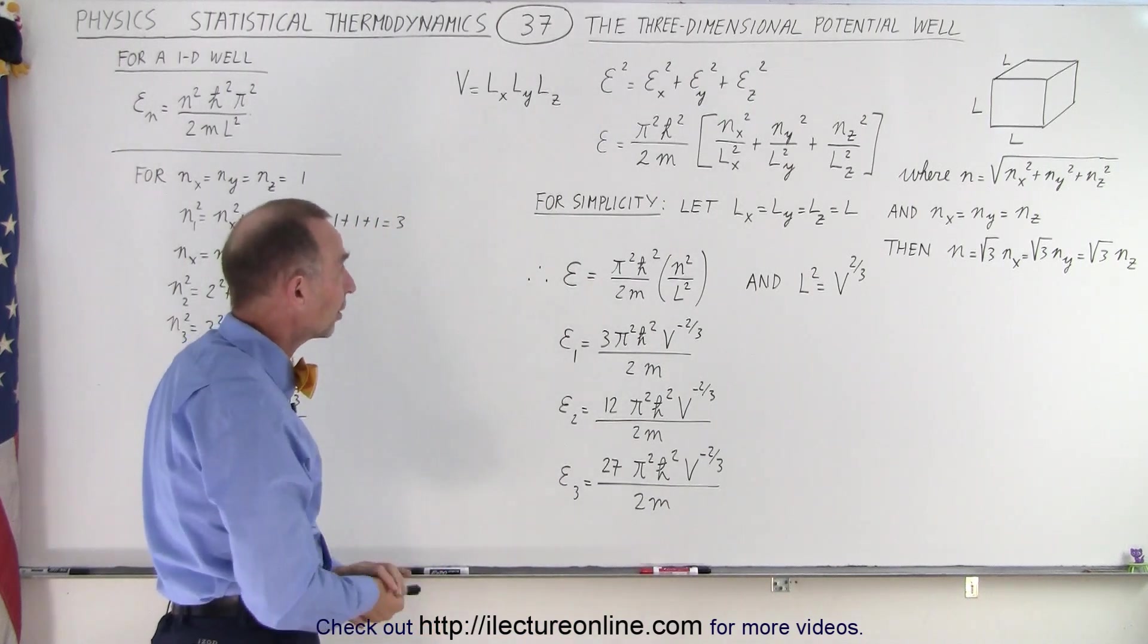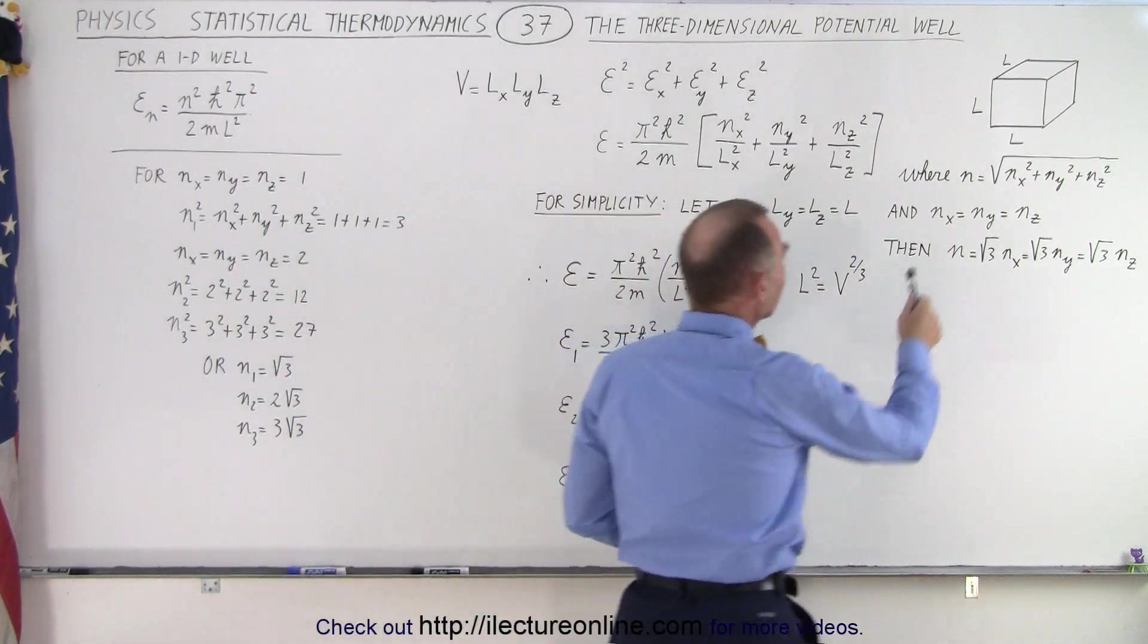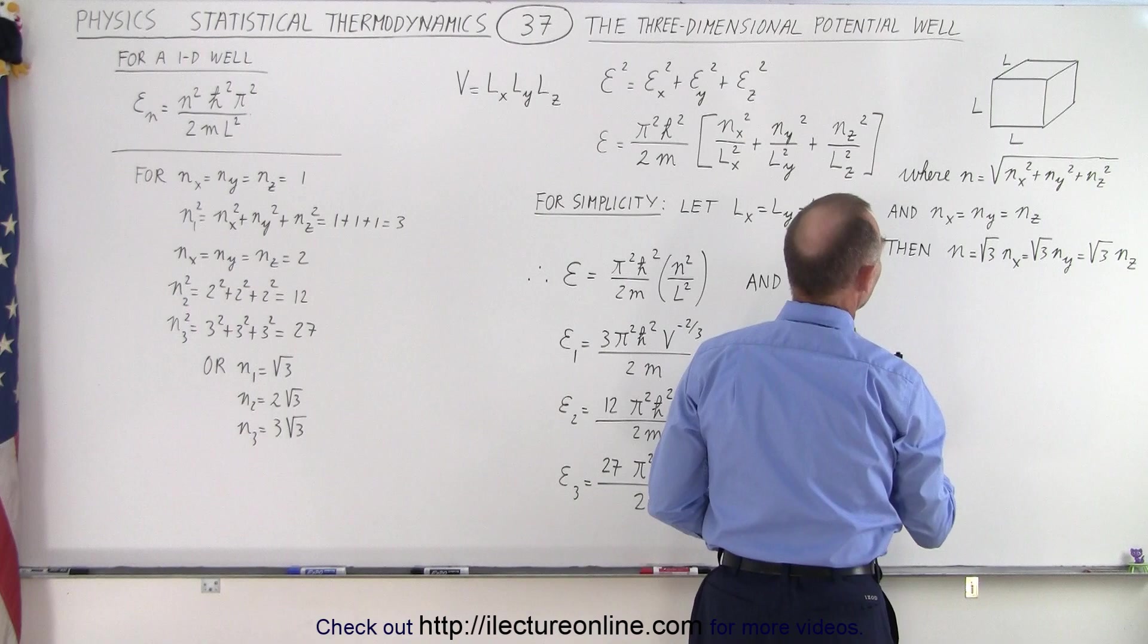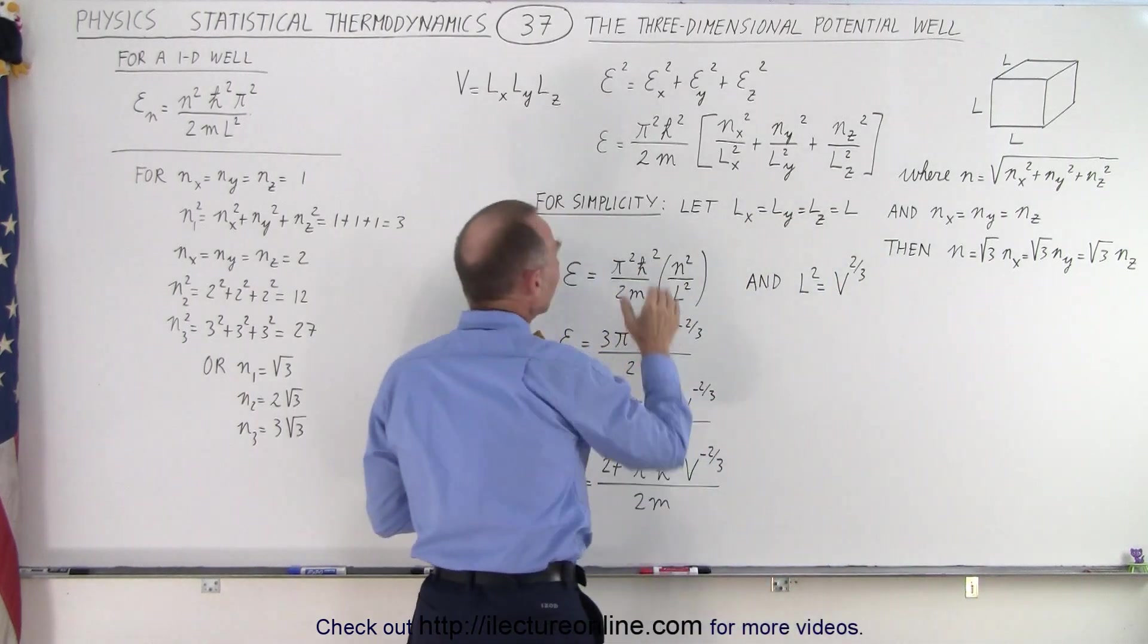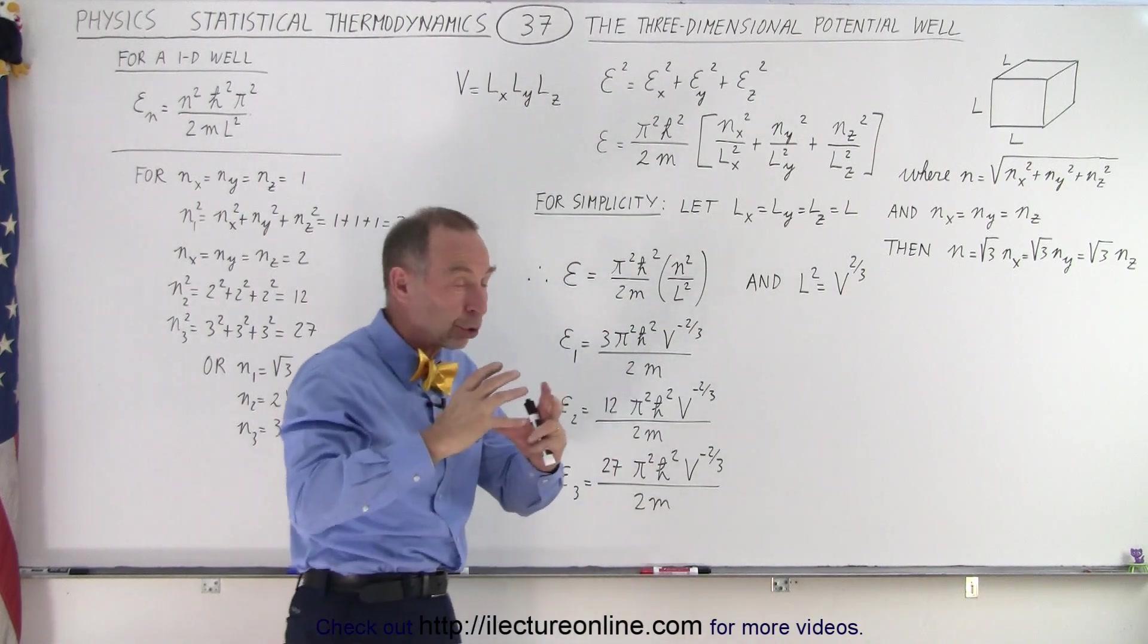Or in this case, we'll probably deal with a single particle. So notice that the n will be equal to the square root of simply the sum of the squares.